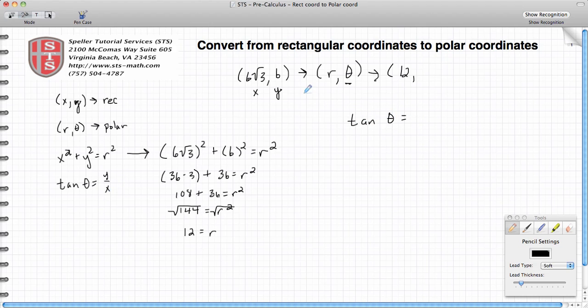Tan(θ) is equal to the y value that we're given, which is 6, over the x value that's given, which is 6√3. All right, this fraction here I can simplify.